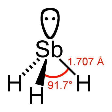Antimony trihydride is generally prepared by the reaction of Sb³⁺ sources with hydride equivalents. For example: 2 antimony trioxide plus 3 LiAlH4 yields 4 antimony trihydride plus 1.5 lithium oxide plus 1.5 aluminium oxide. Alternatively, 4 antimony trichloride plus 3 NaBH4 yields 4 antimony trihydride plus 3 sodium chloride plus 3 BCl3. Sources of Sb³⁻ can also react with protic reagents to produce this unstable gas, as in: sodium antimonide plus 3 H2O yields antimony trihydride plus 3 NaOH.